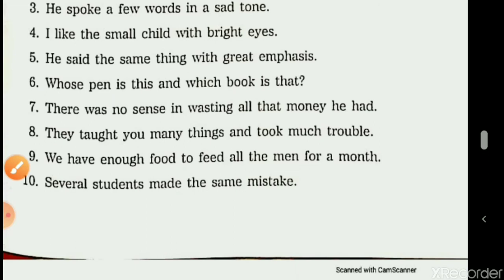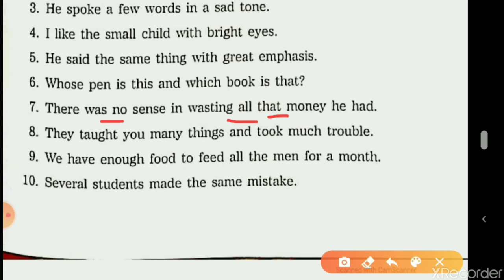The seventh sentence: 'There was no sense in wasting all that money he had.' 'No' describes the noun 'sense' and 'all' describes the noun 'money' — both answer 'how much,' so both 'no' and 'all' are adjective of quantity. 'That' points to a particular money, so 'that' is a demonstrative adjective.